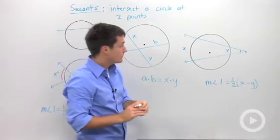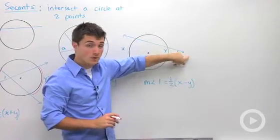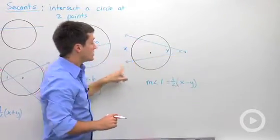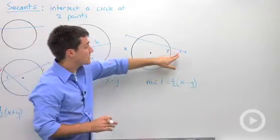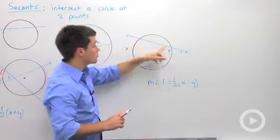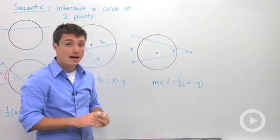Third key thing is when we have a point outside the circle and we draw two secants. Notice that these are not tangent. What is interesting is that this angle right here that is formed by these two rays is equal to half of the difference,